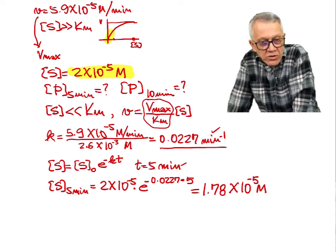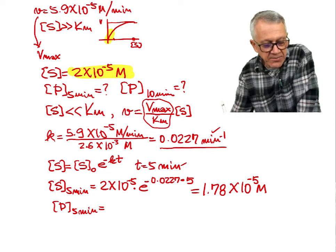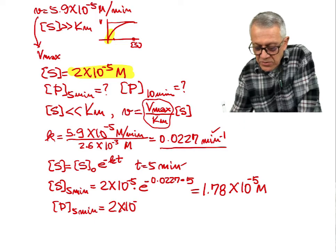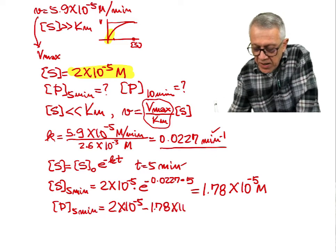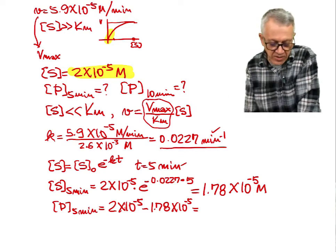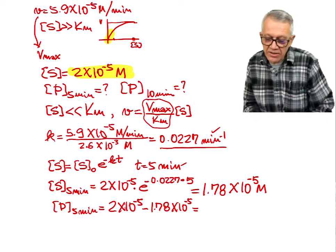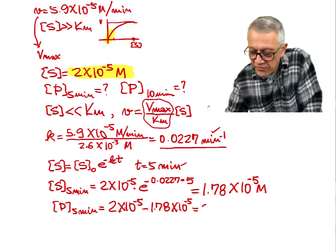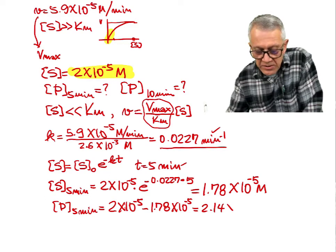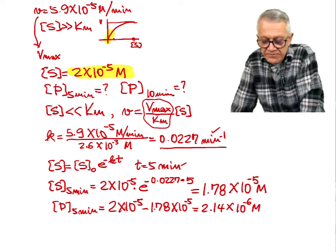We want the concentration of the product at 5 minutes. The product equals the initial substrate concentration minus what remains: 2×10⁻⁵ − 1.78×10⁻⁵ = 2.2×10⁻⁶ molar, approximately 2.16 micromolar at 5 minutes.